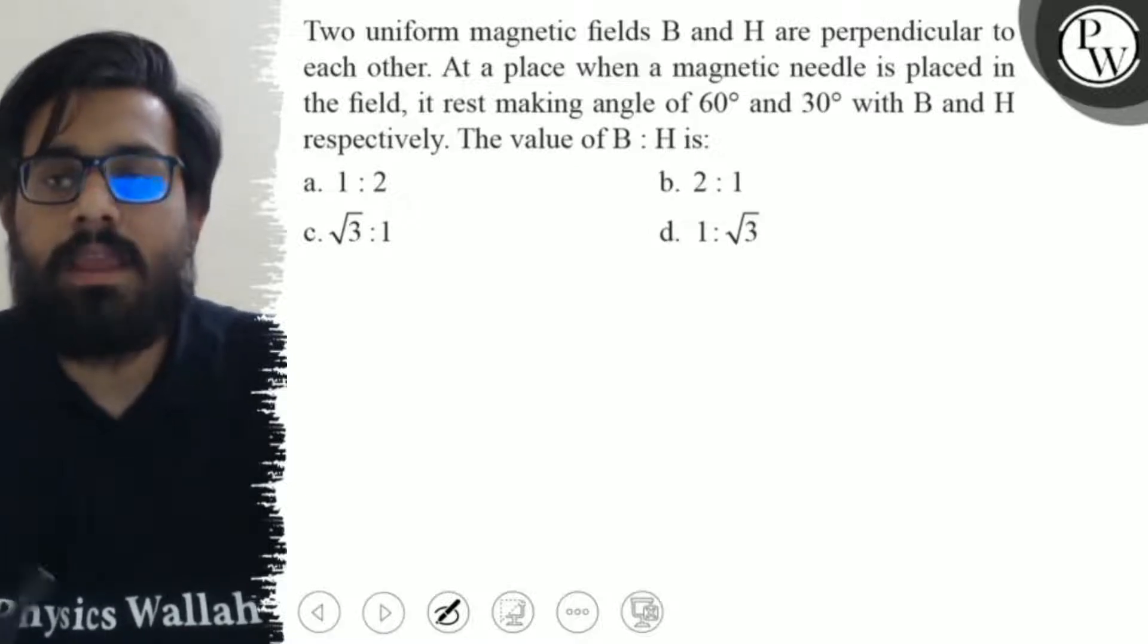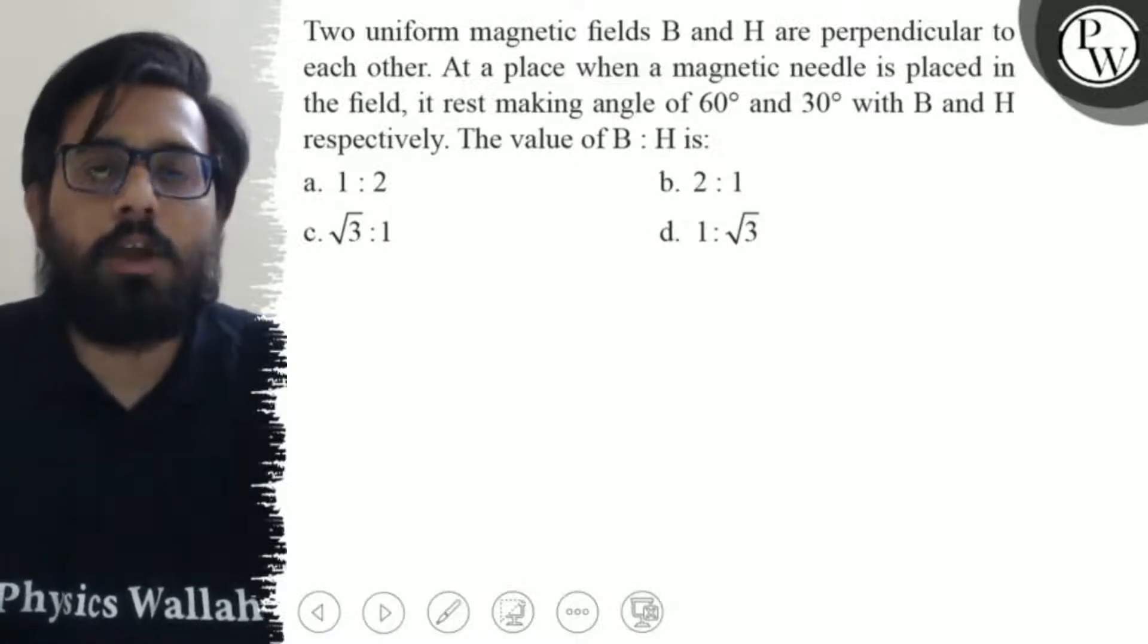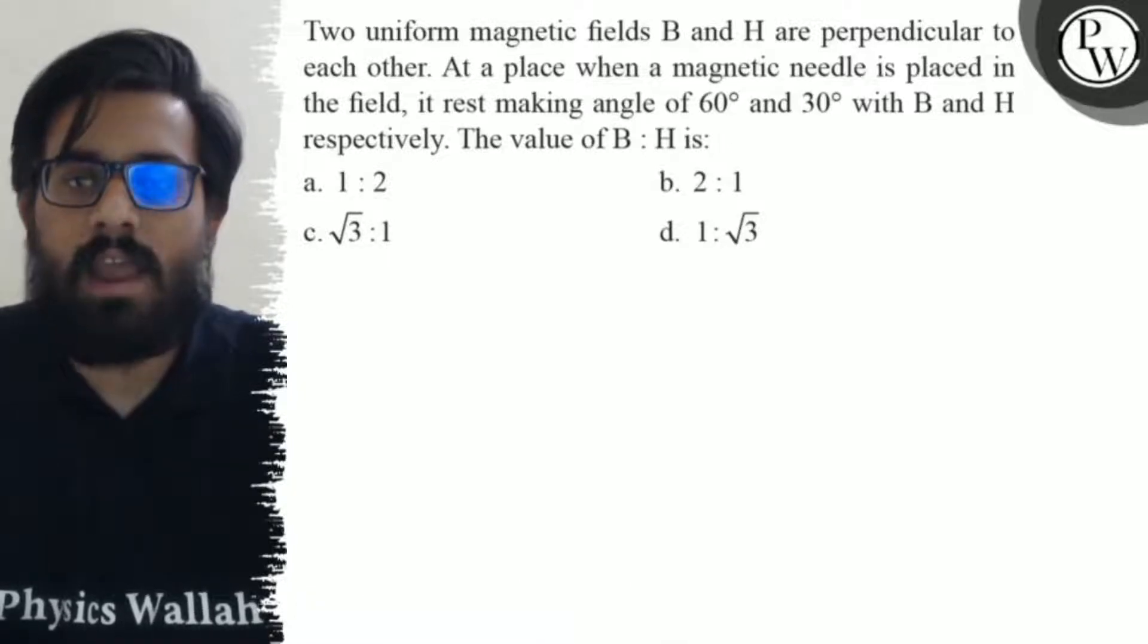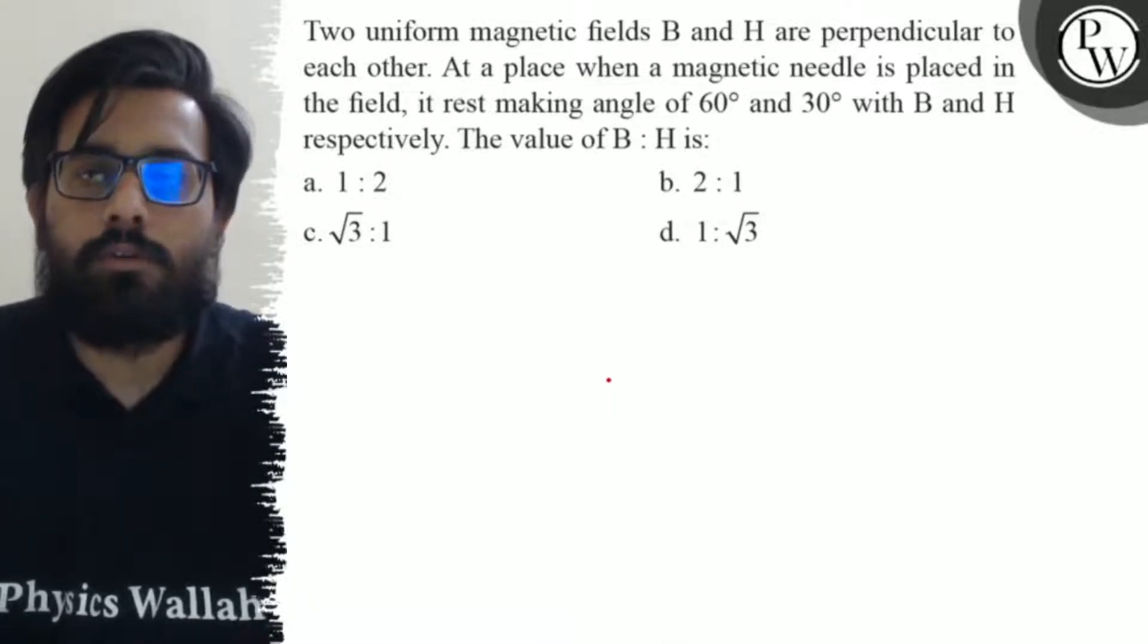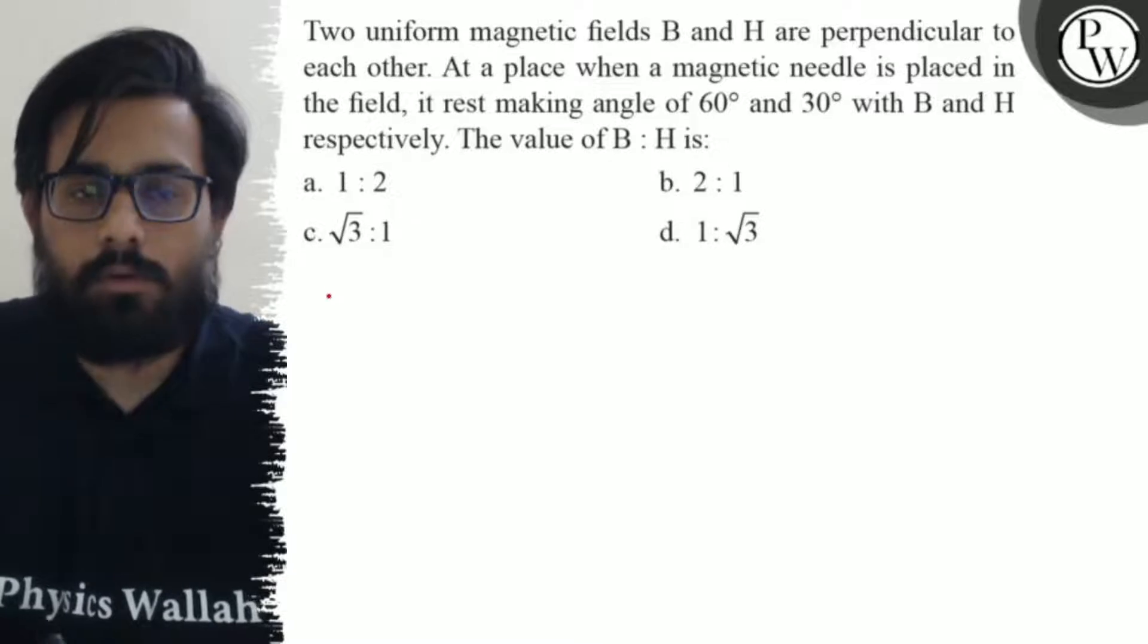The value of B:H is - the first option is 1:2, second option is 2:1, your third option is √3:1, and the fourth option is 1:√3.